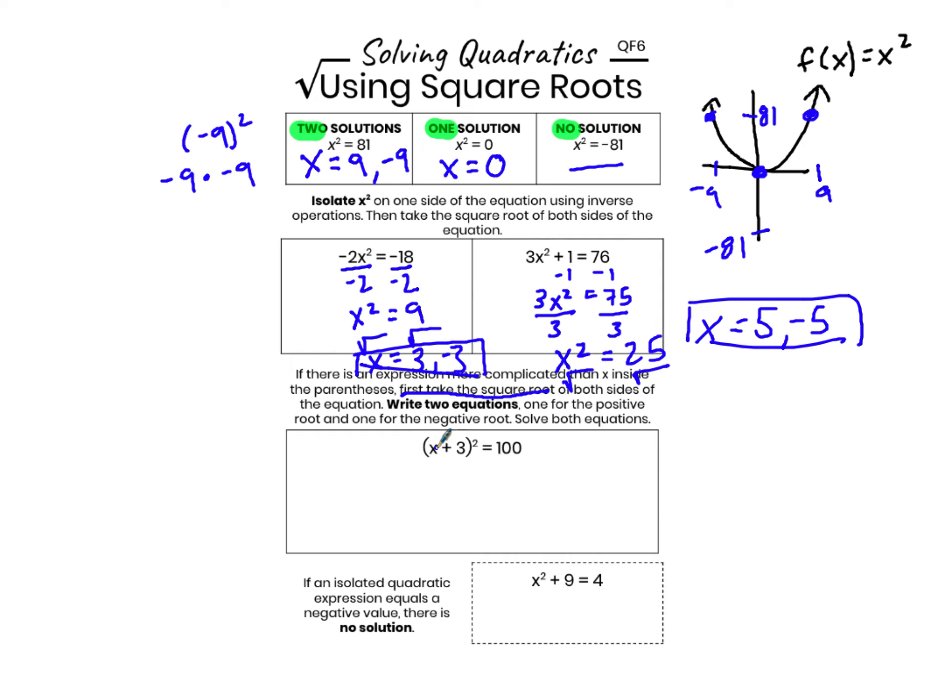Now my first step is to take the square root. This makes sense when I think through my order of operations. I have x, I add 3, and then I square that whole thing. So when I'm using inverse operations, the first thing that I need to do is undo the squaring by taking the square root of both sides of my equation.